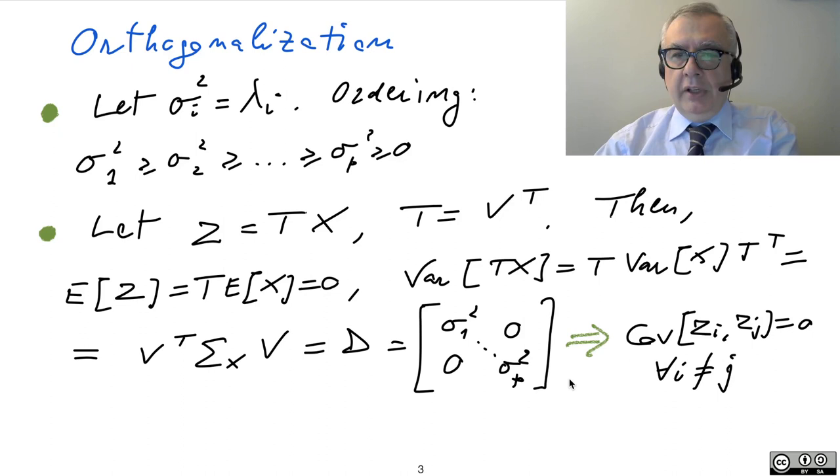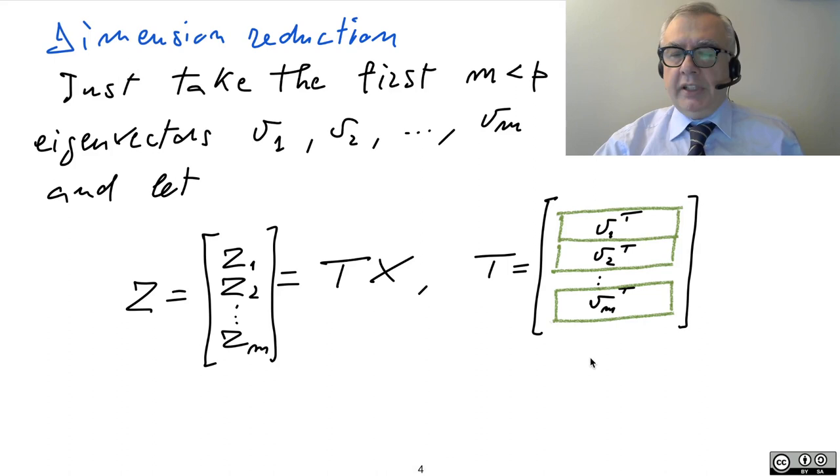And so, if you have this matrix sigma X, you can go and just obtain the transformation matrix that's going to orthogonalize it, to diagonalize it and to orthogonalize the random vector.